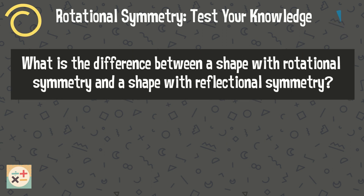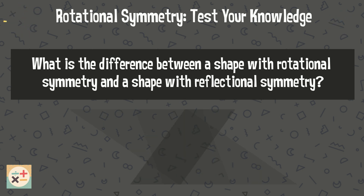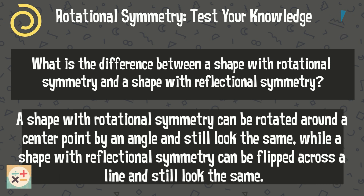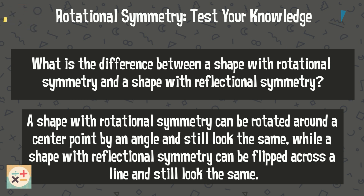Question 2: What is the difference between a shape with rotational symmetry and a shape with reflectional symmetry? A shape with rotational symmetry can be rotated around a center point by an angle and still look the same, while a shape with reflectional symmetry can be flipped across a line and still look the same.